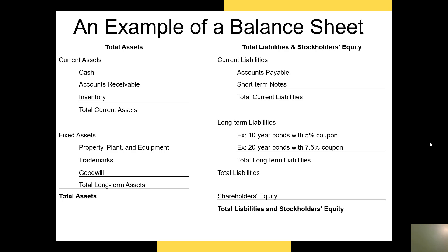On the liabilities and stockholders' equity side, we separate liabilities based on whether they have maturities of one year or less. Current liabilities — those with a maturity of a year or less — are often accounts payable, or assets we have purchased but not paid for, and short-term notes such as a six-month bond. We also report the current payments we will need to make on our long-term bonds. Long-term liabilities are reported under the long-term liabilities section, and the amounts reported are typically the amount we still owe, determined using the time value of money.